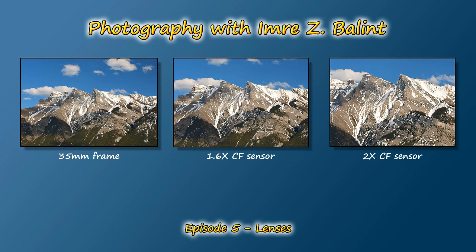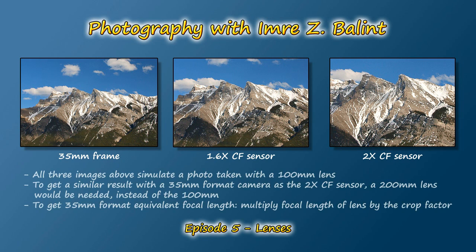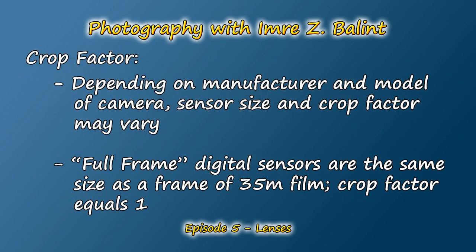Note that the photos produced by the 1.6 and 2 times crop factor sensors appear as if the image is magnified, but really there is only cropping that occurs — no magnification. Using the 2 times crop factor sensor example, you would need a 200 millimeter lens on a 35 millimeter format camera to get an equivalent field of view. Remember, the original lens was 100 millimeters, so multiply that by the crop factor of 2 — there's your 200. So you multiply the focal length of the lens you're using on your digital camera by the crop factor to get the equivalent focal length on a 35 millimeter format camera.